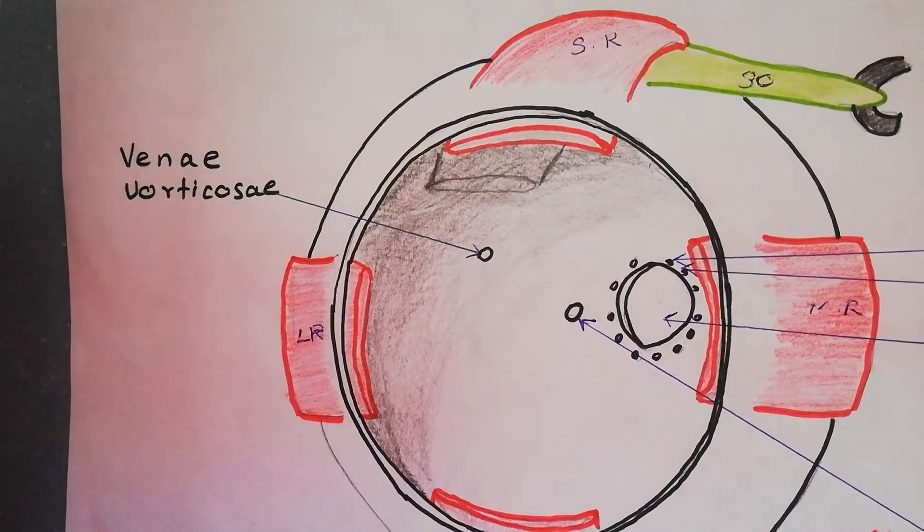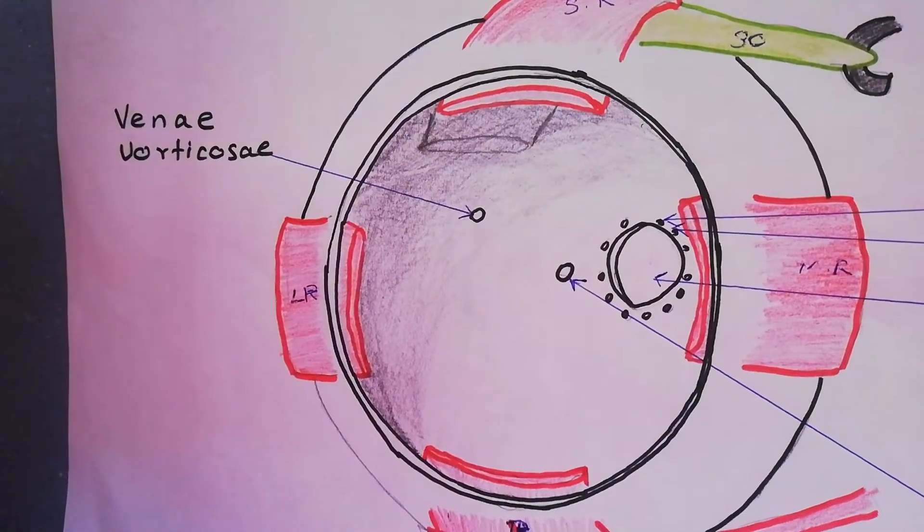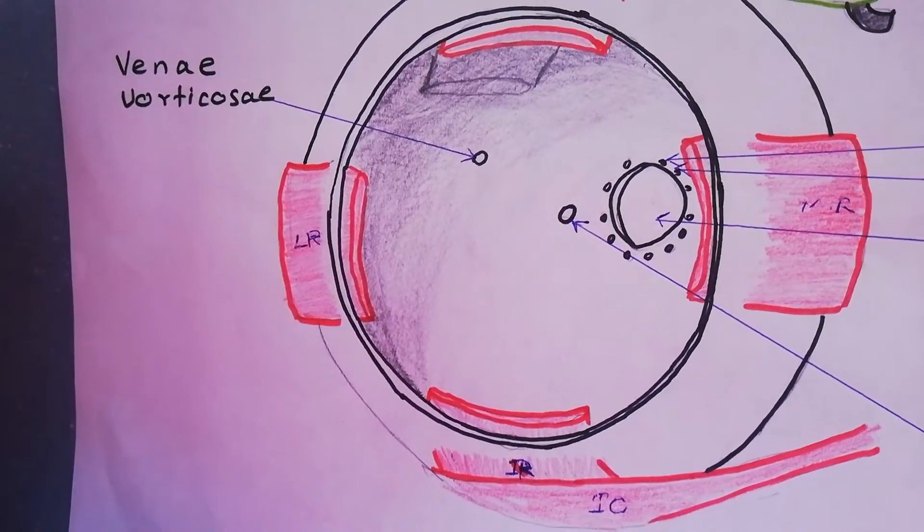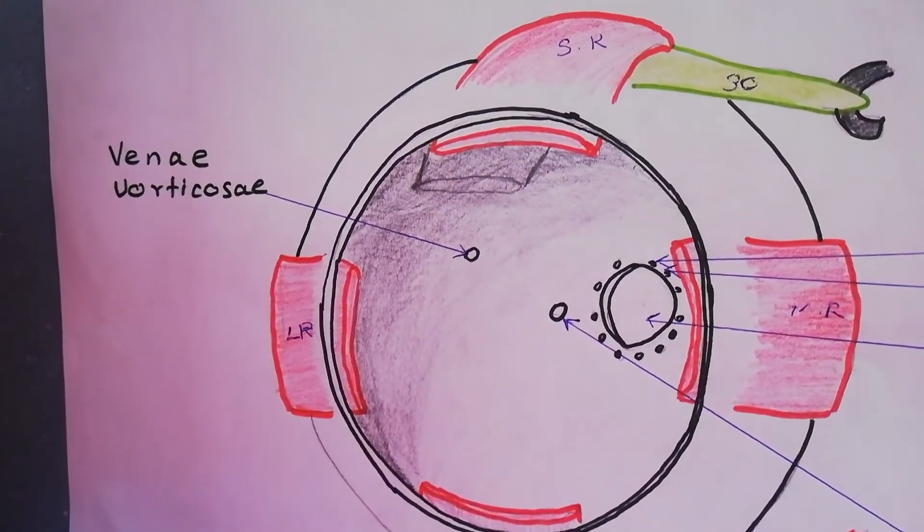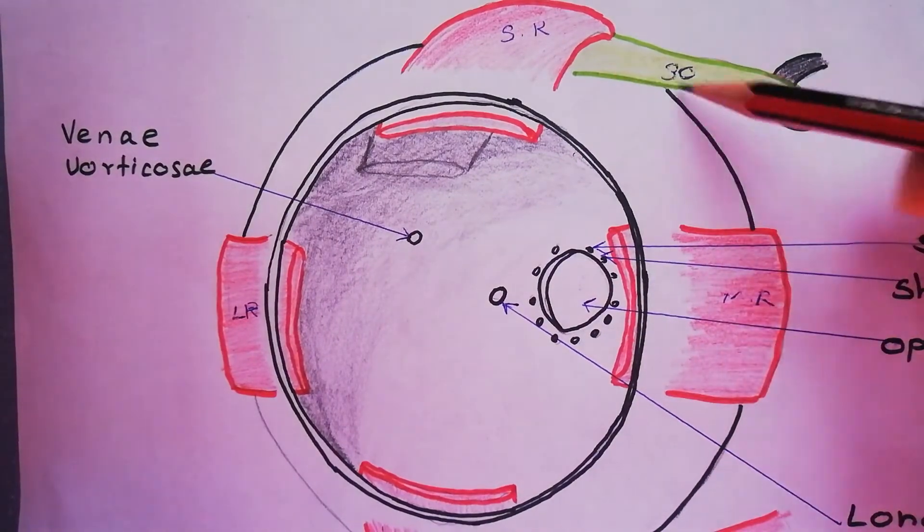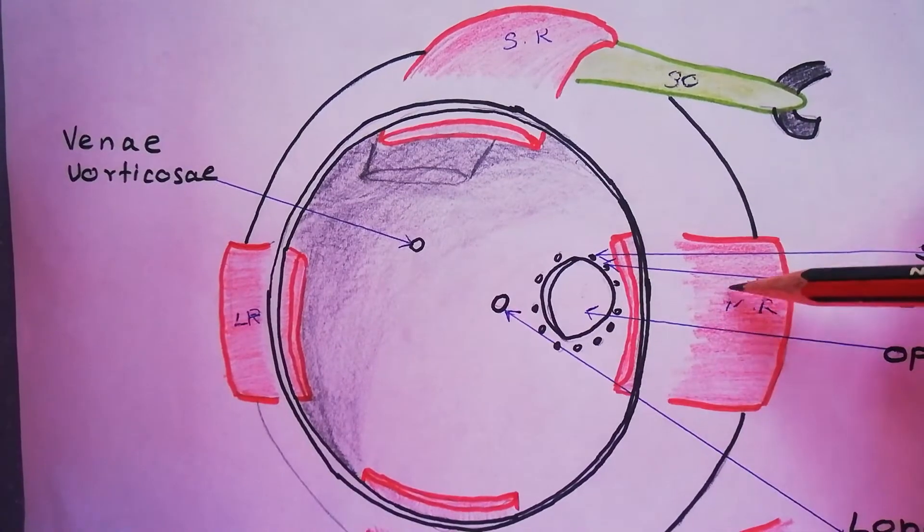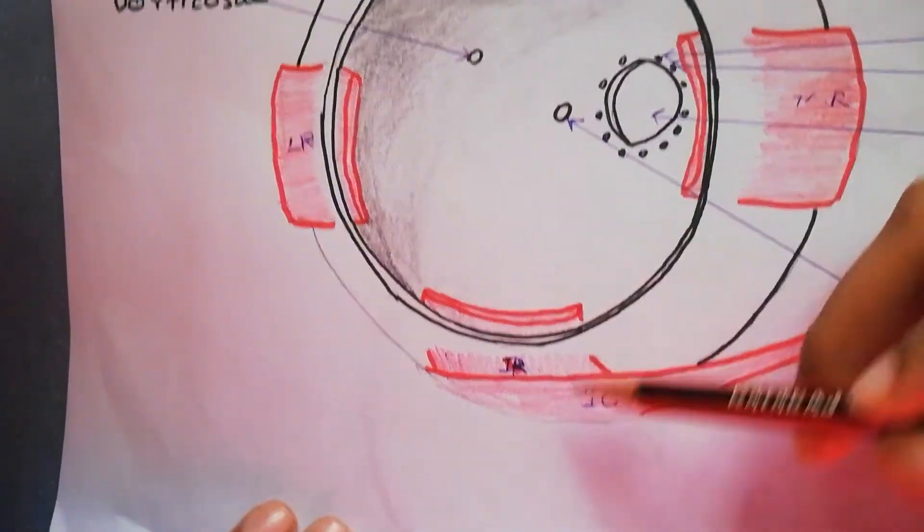Extraocular muscles pierce the facial sheath at the equator of the eyeball so that the sheath is reflected onto their tendons. Here is the superior rectus and this is the tendon of the superior oblique muscle. This is medial rectus, inferior oblique, inferior rectus, lateral rectus.